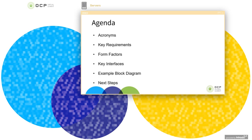Here's the agenda at a high level. We'll be going over some acronyms which we frequently use in the spec, some key requirements, supported form factors of the SCM, key interfaces of the SCM module, an example block diagram that puts together all the interfaces, and some next steps to follow up on.